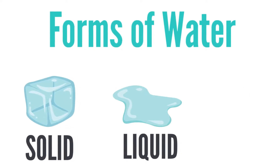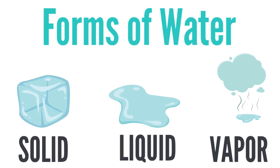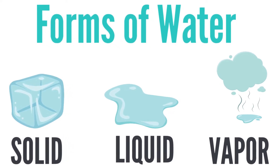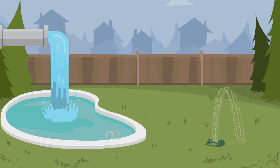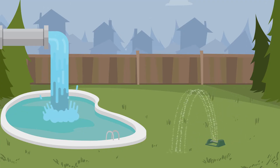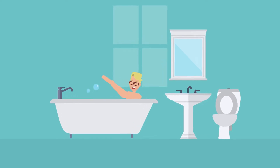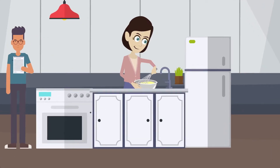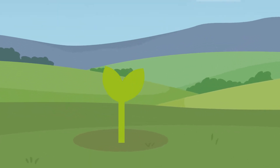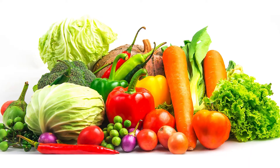Three Forms of Water. Today, we are going to talk about water. Water is very important. We drink water. We bathe with water. We cook with water. We grow plants and fruits and vegetables with water.